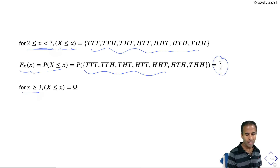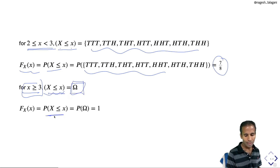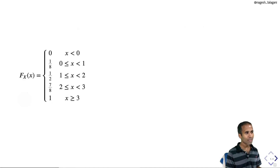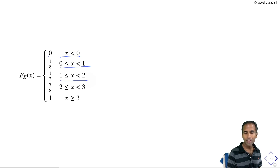For x ≥ 3, every outcome satisfies X ≤ x, so the probability equals 1. Thus the CDF is: F(x) = 0 for x < 0; 1/8 for 0 ≤ x < 1; 1/2 for 1 ≤ x < 2; 7/8 for 2 ≤ x < 3; and 1 for x ≥ 3. The graph is a step function with four discontinuities at 0, 1, 2, 3, which are precisely the values taken by X.